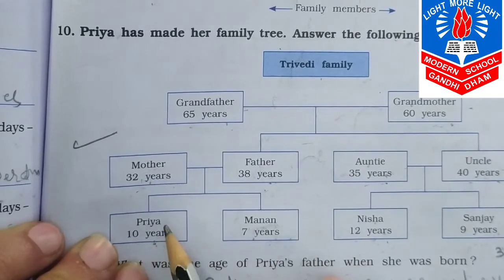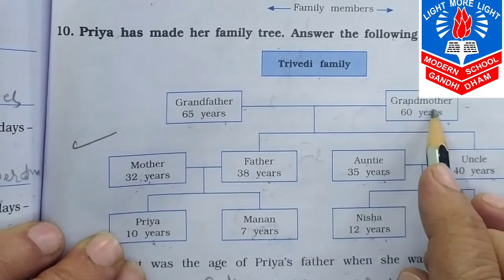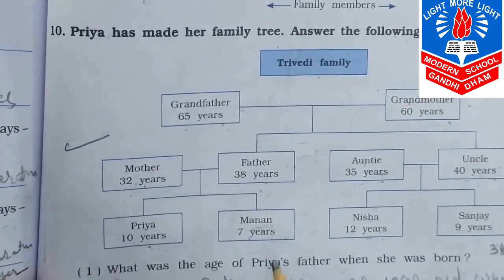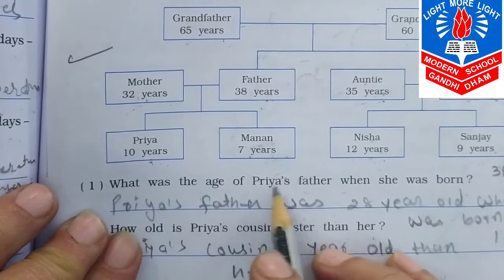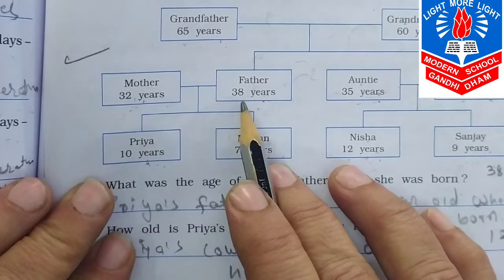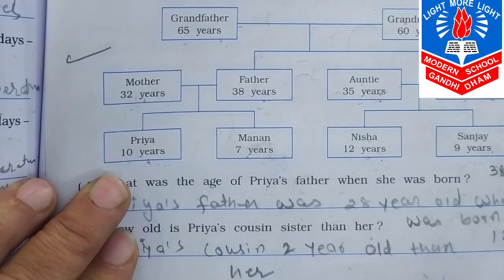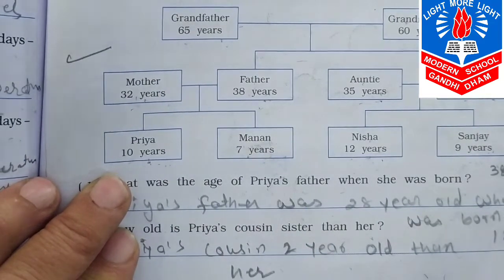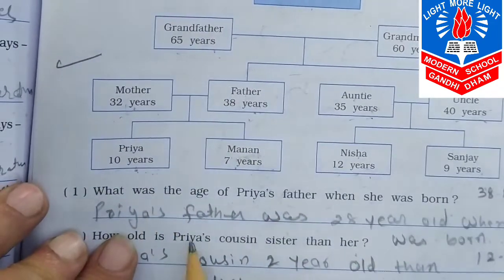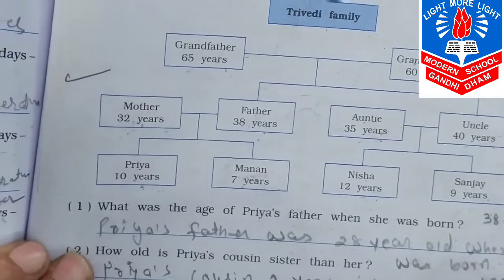Here you can see Priya's mother and father, grandfather and grandmother, auntie, uncle and cousins — Nisha and Sanjay. First question: What was the age of Priya's father when she was born? The age of Priya's father is 38 years and Priya is 10 years old. So 38 minus 10 equals 28. Priya's father was 28 years old when she was born.